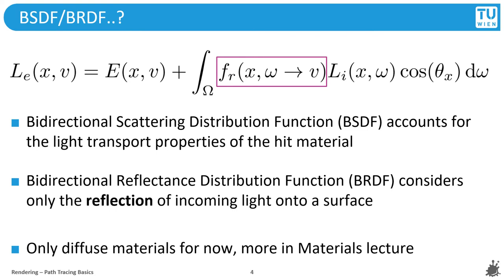The BRDF is a subset of the BSDF, which stands for Bidirectional Reflection Distribution Function. As the name suggests, a BRDF will only consider reflections, but not translucency or transparency of objects, which makes it more straightforward and less mathematically involved. In our basic version of the path tracer, we will implement it to handle opaque, perfectly diffuse materials only, and later extend it with more complex alternatives.